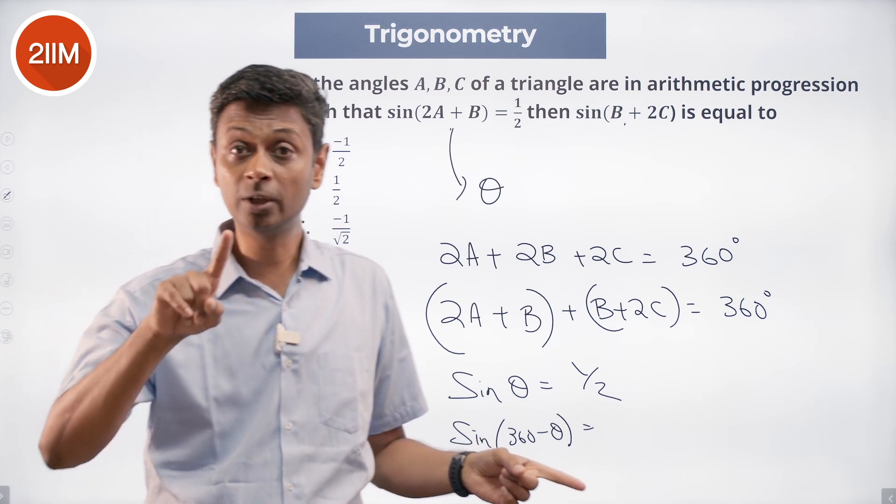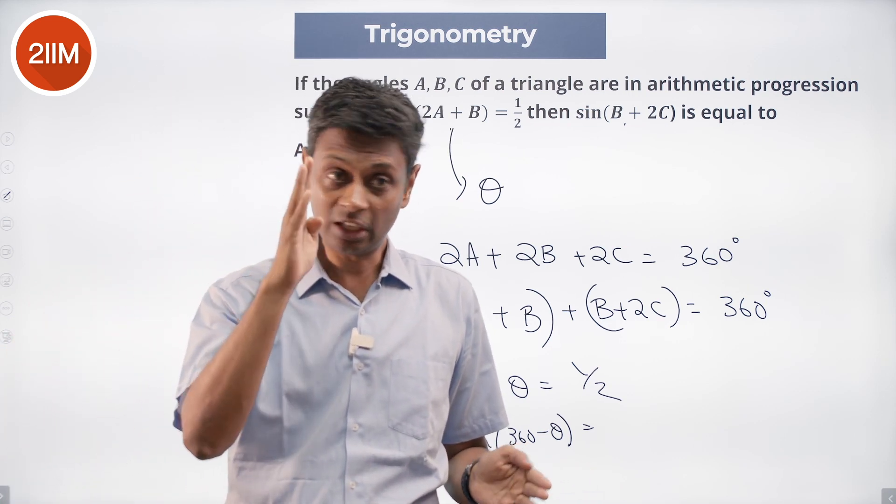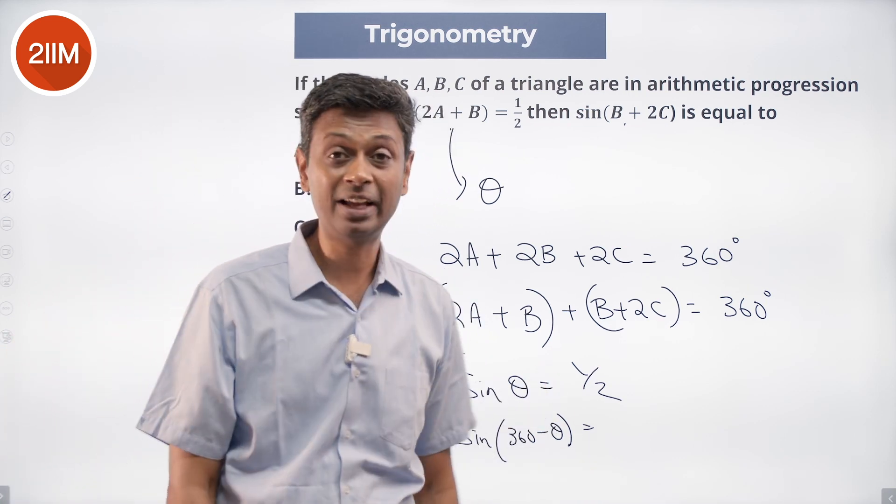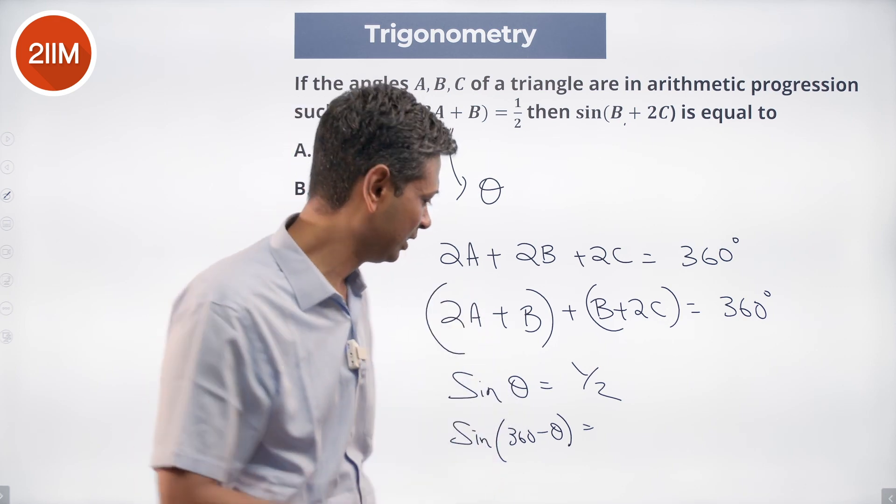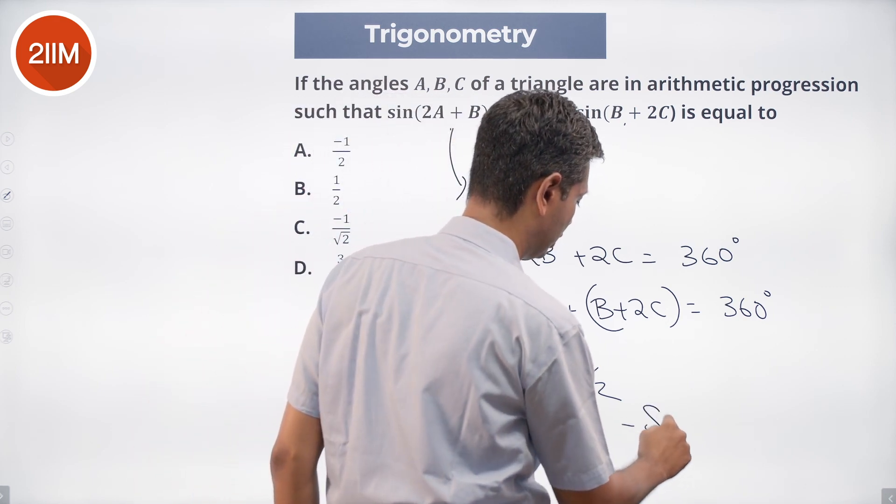360 minus theta - if sine theta is half, 360 minus theta, I can imagine it to be in the fourth quadrant. Negative, this will be minus sine theta.